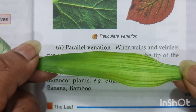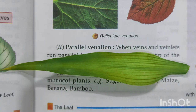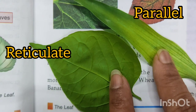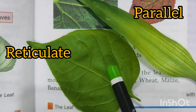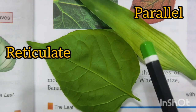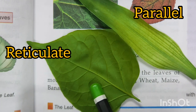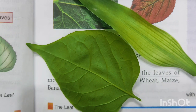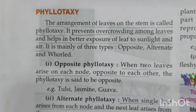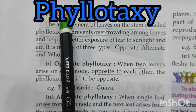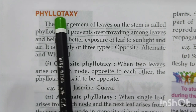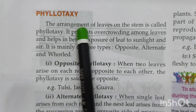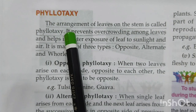Compare the bamboo leaf with reticulate venation — you can see this leaf has a network-like pattern while this leaf has parallel veins running through it. This is reticulate venation of a dicot plant and this is parallel venation of a monocot plant. Next we come to phyllotaxis — the arrangement of leaves on the stem of a plant is known as phyllotaxis.